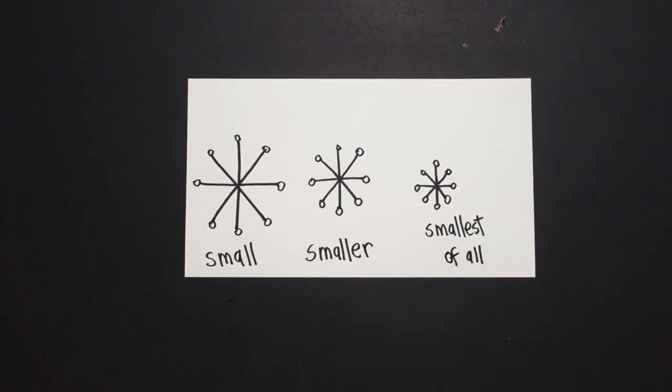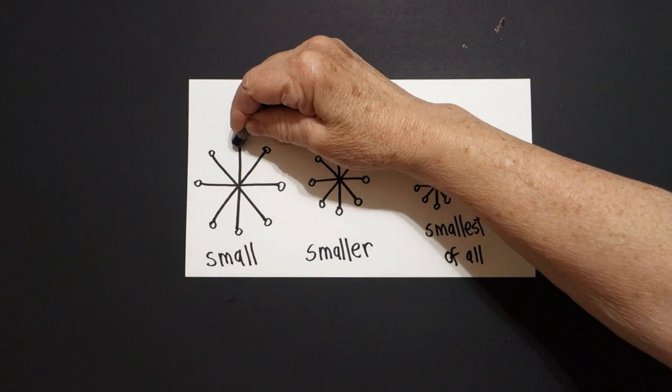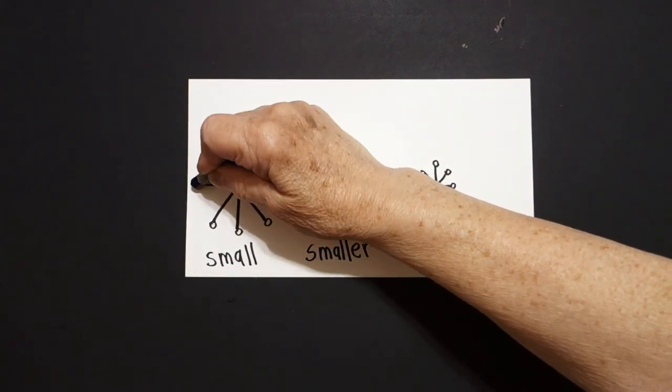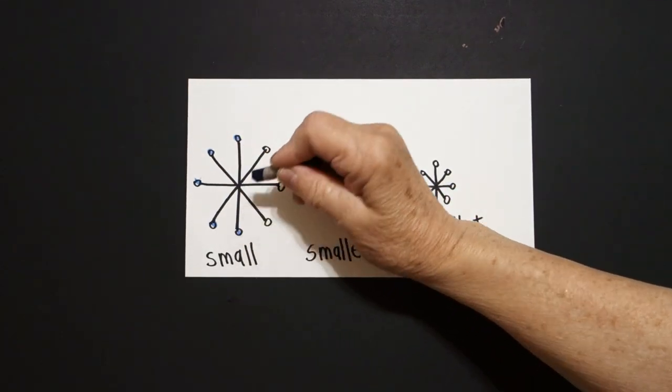Okay, let's see how we're going to color these in. This is super easy because we only need a blue crayon, and the only part we're going to color in are the baby circles going around.